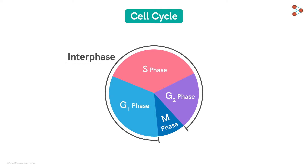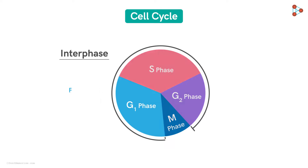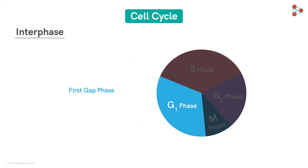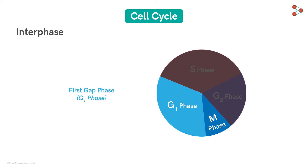The first stage of the Interphase is the first gap phase, abbreviated as G1 phase. This is the first phase occurring in Interphase, hence the name first gap phase. It corresponds to the interval between the M-Phase of the previous cycle and the S-Phase of the current cycle.